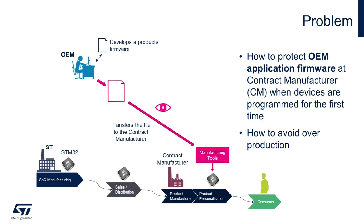The application code is potentially exposed to attacks. The OEM must trust the contract manufacturer, hoping that its application code is not stolen or tampered with, and that the CM does not overproduce parts.